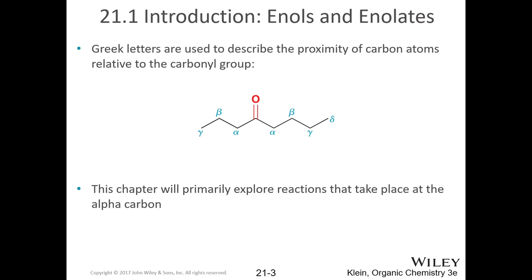We talk about the alpha and beta positions a lot in this chapter. Keep in mind the Greek alphabet doesn't go a, b, c — it goes alpha, beta, gamma, delta. So the third letter is not a 'c,' and then it goes backwards in the English alphabet from gamma to delta. We won't deal with those much, but keep it in mind if you see them in other contexts.